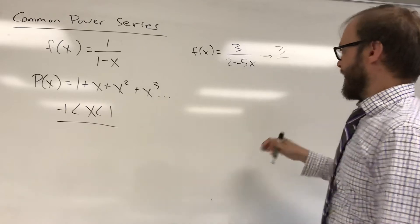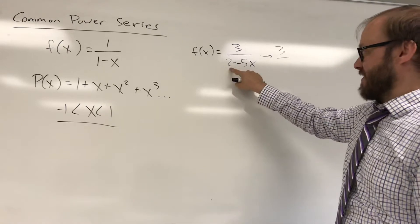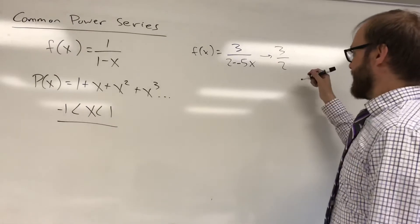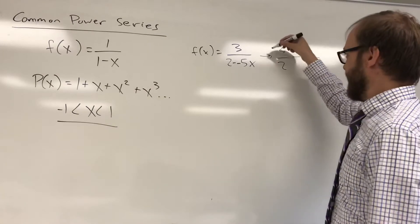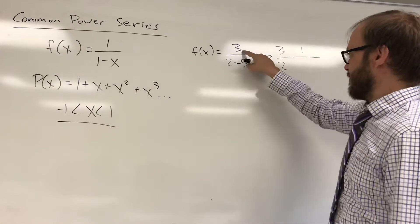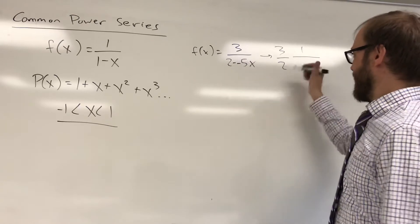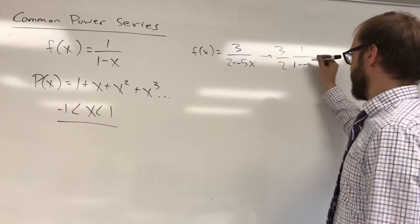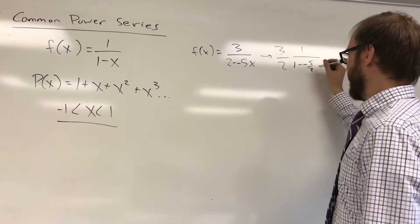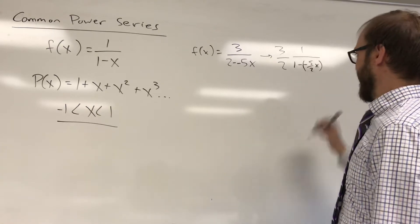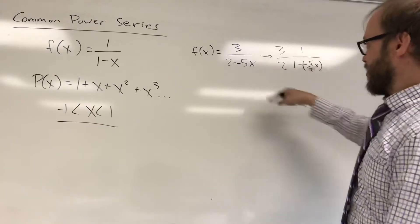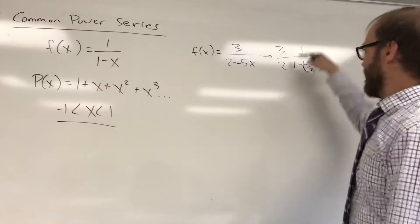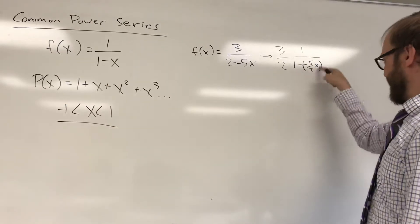A couple of things, you've got a 3 that needs to be factored out of the top, and you need to have a 1 in that position there. So you're going to have to factor a 2 out of the bottom. And what that's going to leave you with in your fraction, you'll have a 1 on top when you factor a 3 out. If you divide this by 2, you're going to be left with a 1. If you divide this by 2, you're going to be left with negative 5 halves x. And again, this should equal this. So we need 1 over 1 minus the input. I've got 1 over 1 minus the input.